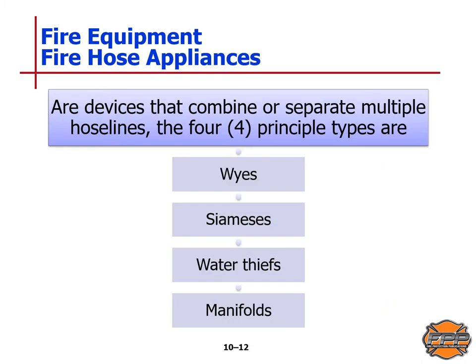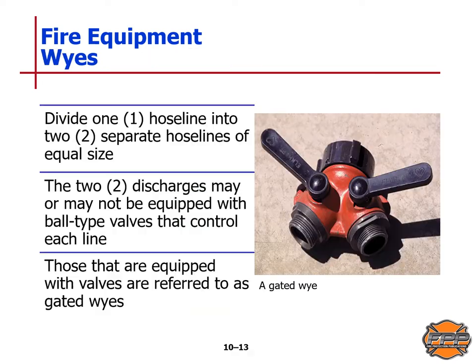Fire hose appliances are devices that combine or separate multiple hose lines. The four principal types are Y's, Siameses, Water Thieves, and Manifolds. A fire equipment Y divides one hose line into two separate hose lines of equal size. The two dischargers may or may not be equipped with a ball-type valve that controls each line — those that are equipped with valves are referred to as gated Y's.